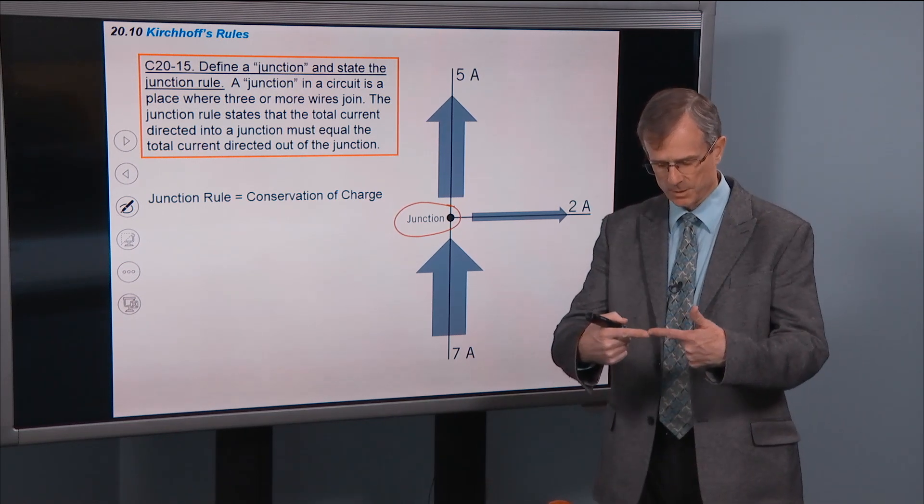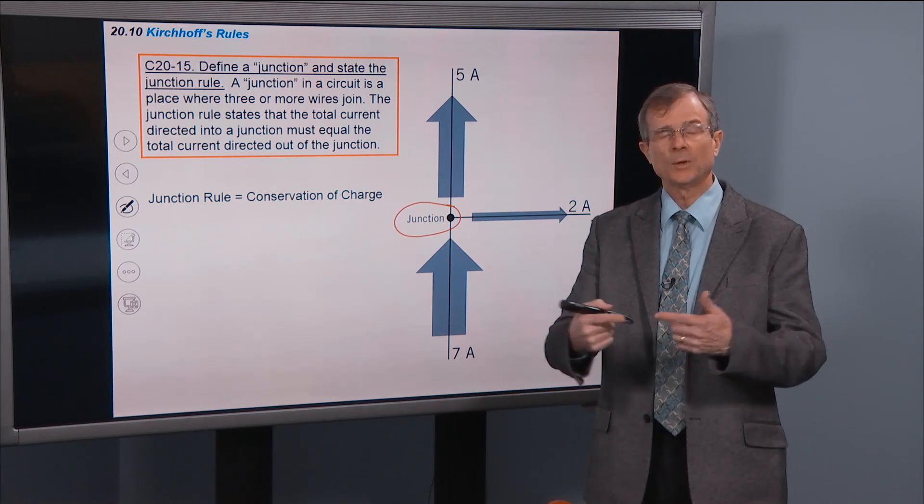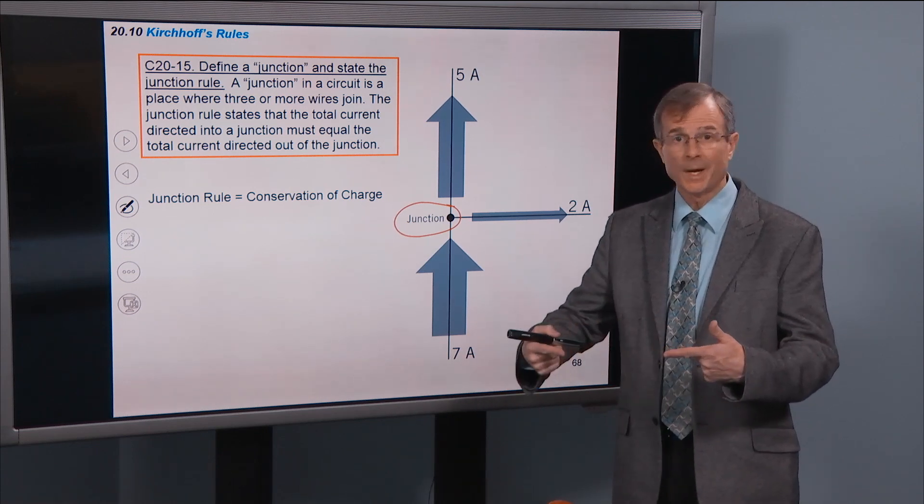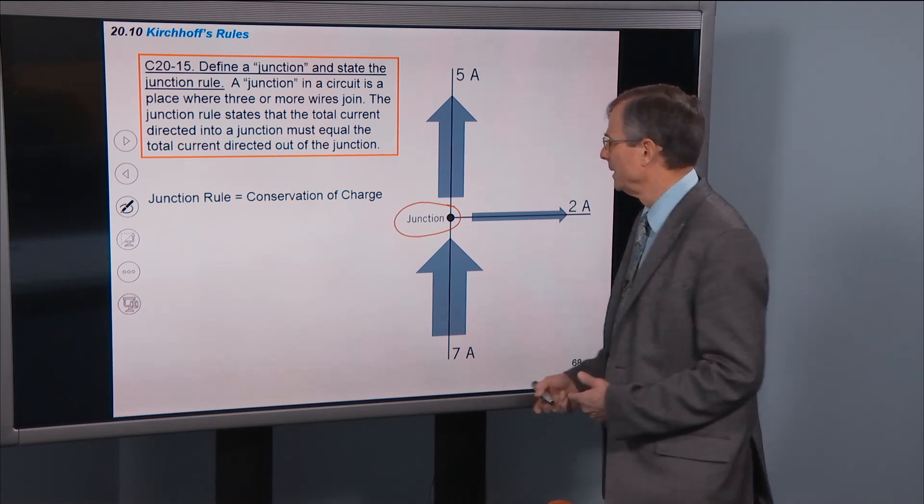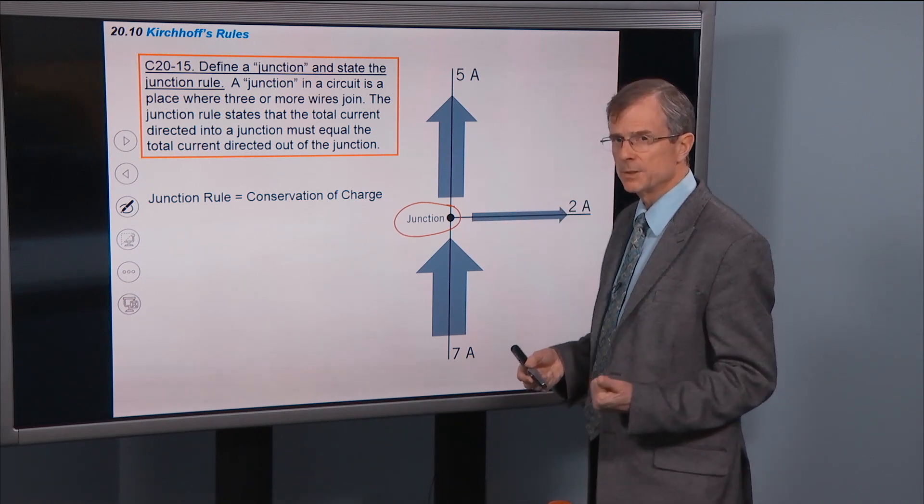You can't have two wires coming together. That's not really a junction or at least we don't call it that in physics. That's just equivalent to one wire going straight through. But a junction you have one, two, three or more wires coming through.